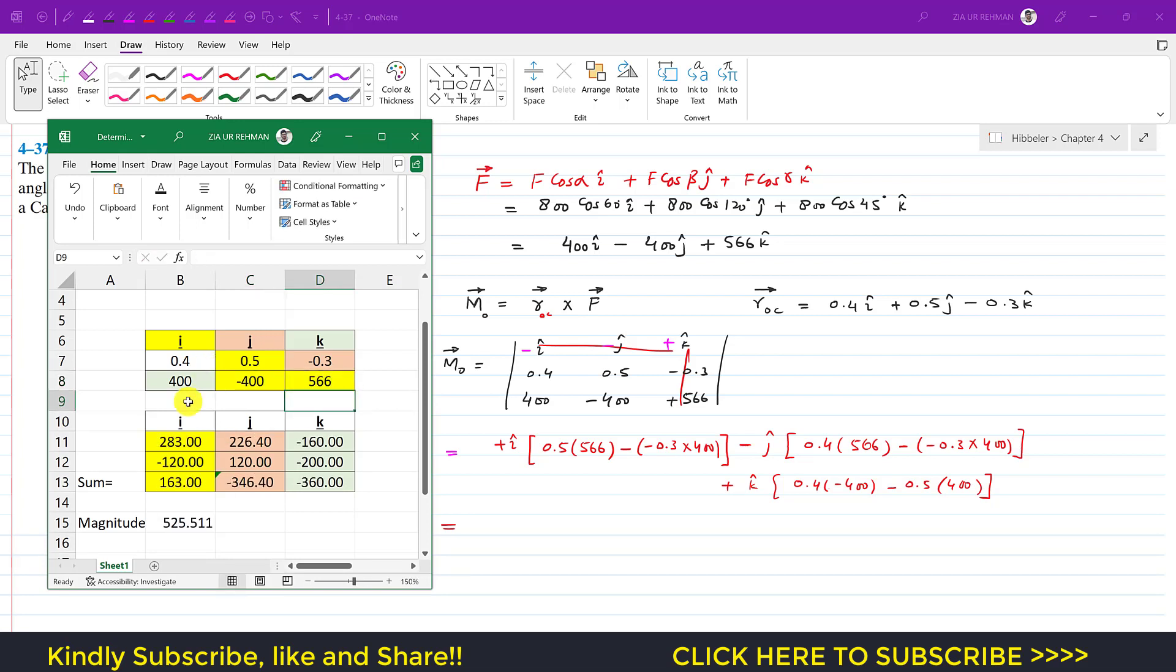So we get the moment components as: this gives us minus 163, then this gives us minus 346, and then this gives us minus 360.